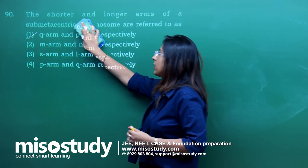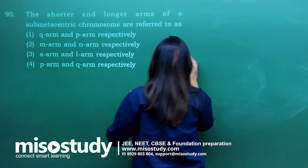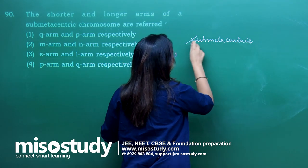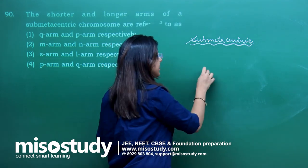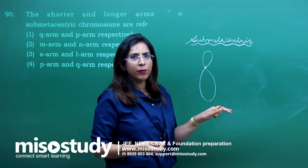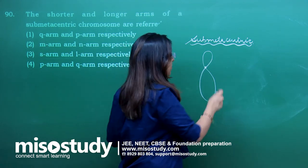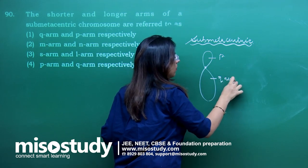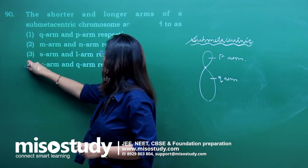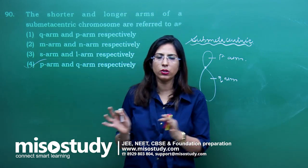Question number 90 — the shorter and longer arms of a submetacentric chromosome are referred to as what? In a submetacentric chromosome, the centromere is slightly shifted from the center. If the centromere were in the center it would be called metacentric. The short arm is called the P arm and the long arm is called the Q arm. The correct answer is option 4 — P arm and Q arm. With this we have completed 45 out of 90 questions.